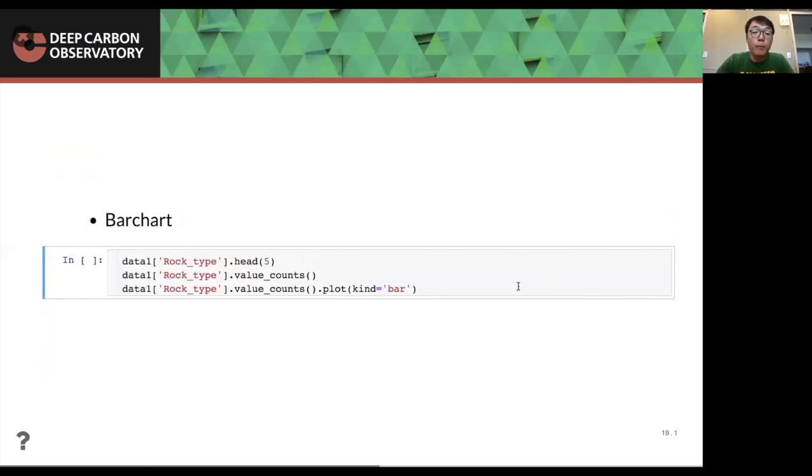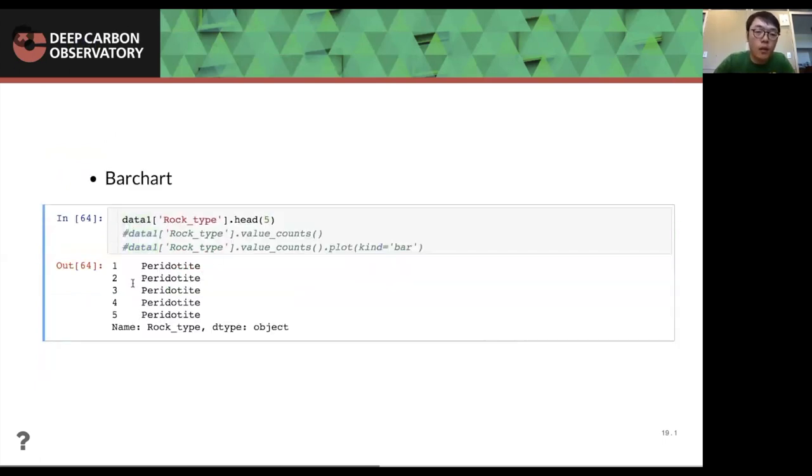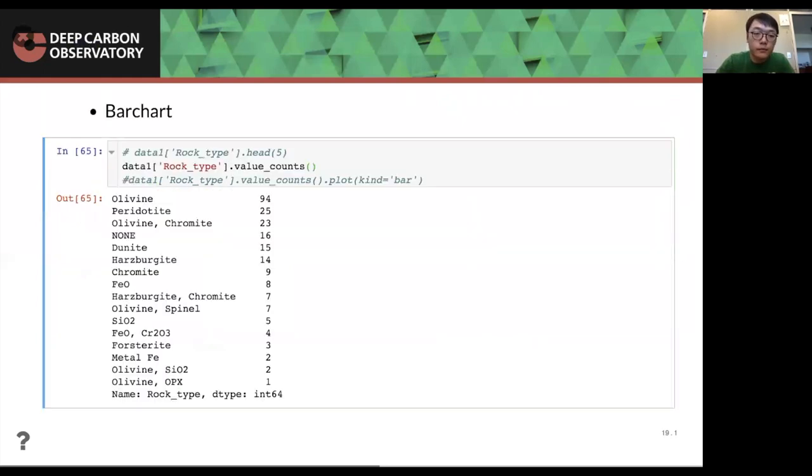Also, we can use the bar chart. So if we take a look at the rock type column, the head five rock type column is strings, which are peridotized. And to know how many strings are in there, we can use a function called value counts. Then it will tell you that there are all these like 13, I think it's 13 different labels. And each label appeared like, all of it appeared 94 times, peridotized appear 25 times, et cetera.